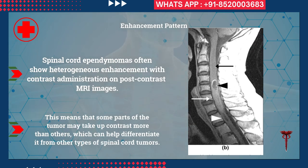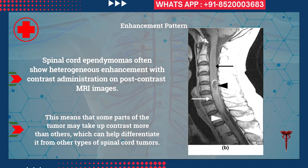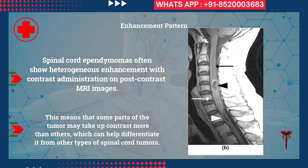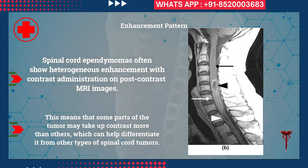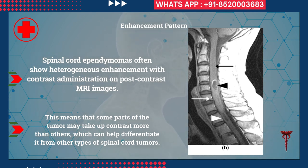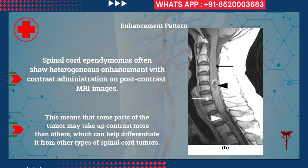Post-contrast images are very important for the diagnosis of spinal cord and brain tumors. Spinal cord ependymomas often show heterogeneous enhancement with contrast administration on post-contrast MRI. This means that some parts of the tumor may take up contrast more than others, which can help in differentiating it from other types of spinal cord tumors. You can see in this picture that some parts of the tumor are non-enhancing while others enhance — this is the heterogeneous enhancement pattern.